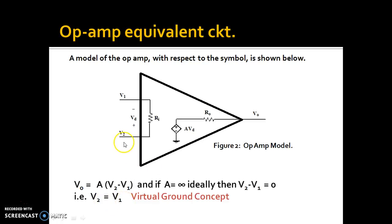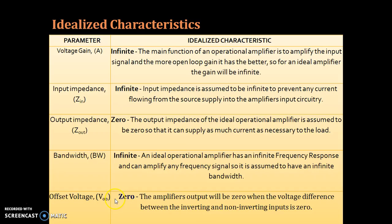Which implies that whatever the voltage of the non-inverting terminal is, the V1 that is inverting terminal voltage will be the same as the non-inverting terminal voltage. This concept is called virtual ground concept. This is actually showing that the V1 and V2 are virtually shorted or virtually grounded. That's why V1 is equal to V2.